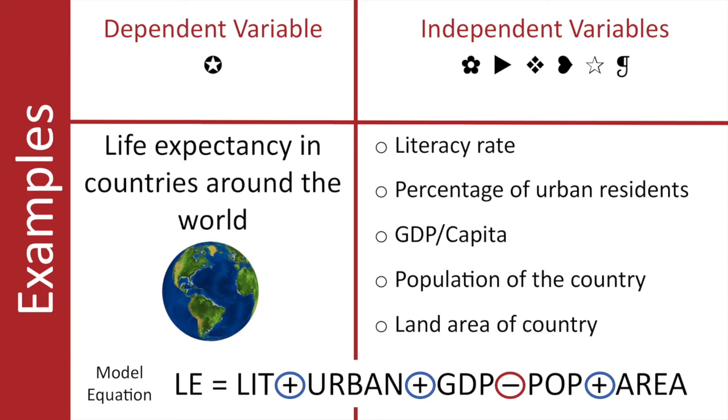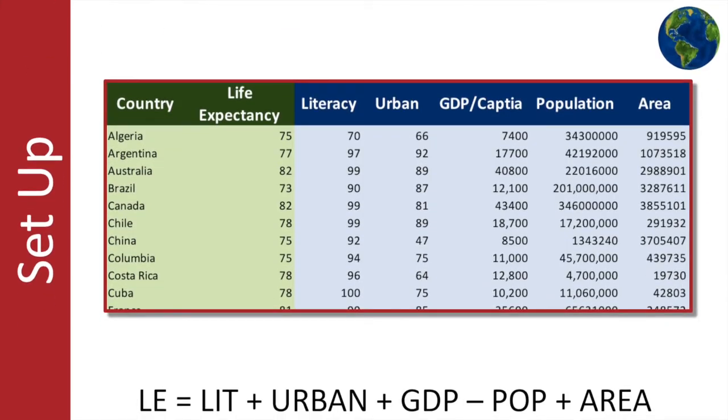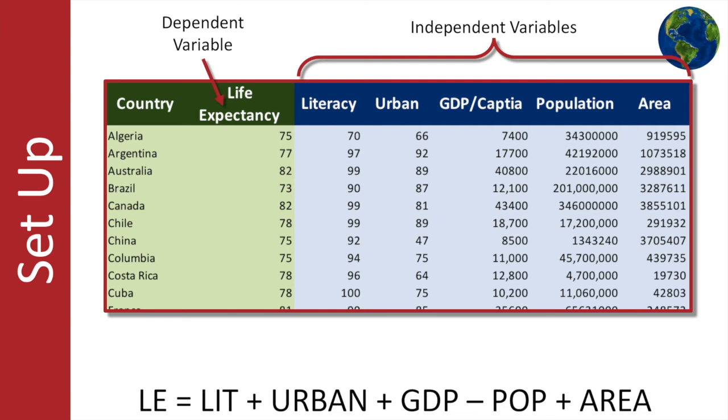So now we need a spreadsheet. Here's where we set up the data. Actually, just gathering the data can sometimes be the most time-consuming part of the regression analysis. So you can see here my dependent variable is in one column, and my independent variables are in the following columns. This column here, it's not going to be a part of the regression, but it's there to help me stay organized and provide some additional information.